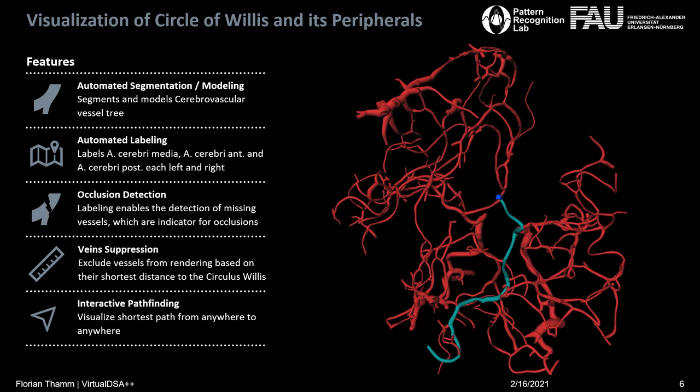These pathways can be used for pathfinding problems, for instance for mechanical thrombectomies. In this case, it does not really make sense to plan a path deeply into the brain, but rather starting from the carotis interna, for instance. So it's time for a demonstration.